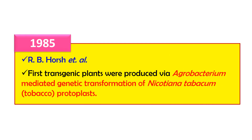In 1985, R.B. Horsch and colleagues first produced a transgenic plant using agrobacterium-mediated genetic transformation. The plant was Nicotiana tabacum, that is tobacco. They used tobacco protoplasts and by using agrobacterium-mediated transformation, they produced the first transgenic plants.